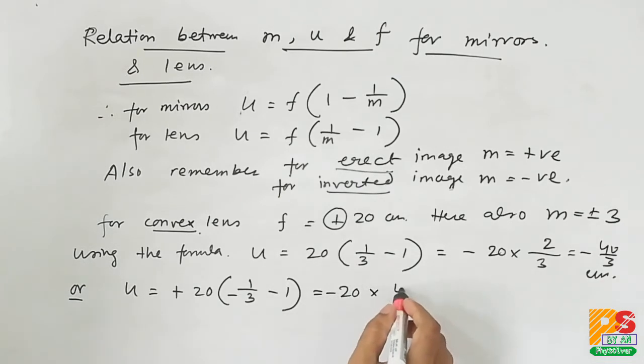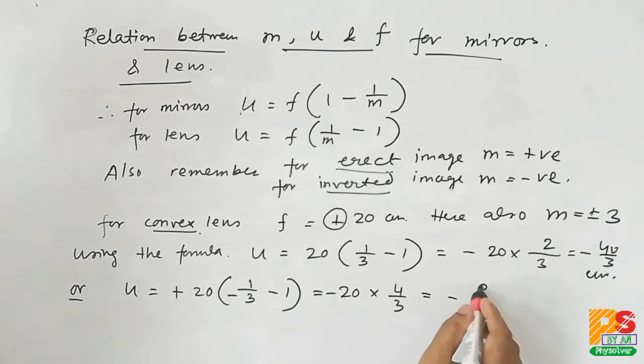And when m is minus 3, answer is minus 80 by 3 centimeters. Thank you for watching this video, please subscribe to my channel Phi Solver.